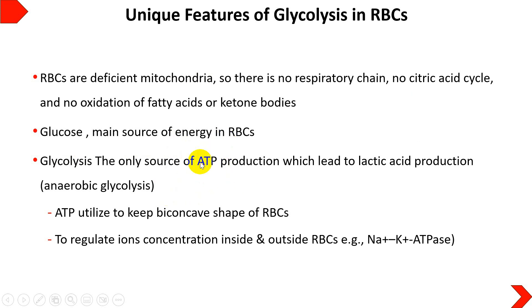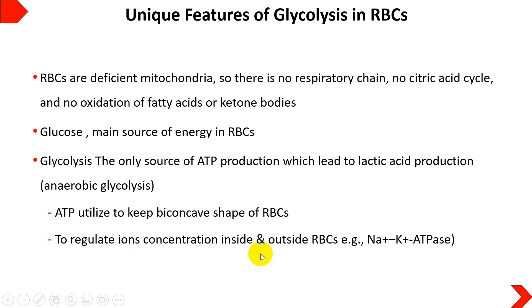The ATP produced by red blood cells from glycolysis is utilized for two purposes. First, it maintains the biconcave shape of red blood cells, which helps in carrying hemoglobin and allows them to move easily through arteries and veins, delivering oxygen to the tissues. Second, ATP is used for ion concentration regulation inside and outside the cells, such as via the sodium-potassium ATPase pump, transporting ions like potassium against the concentration gradient.